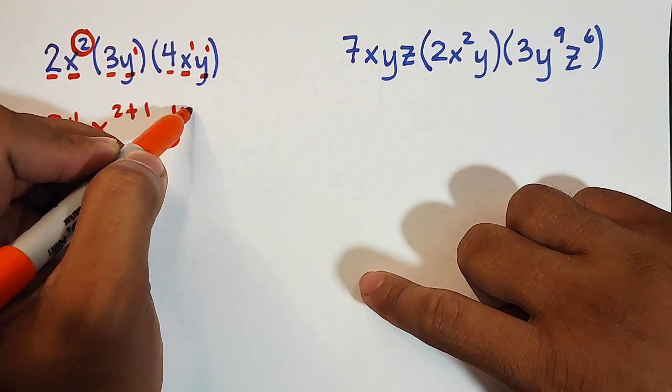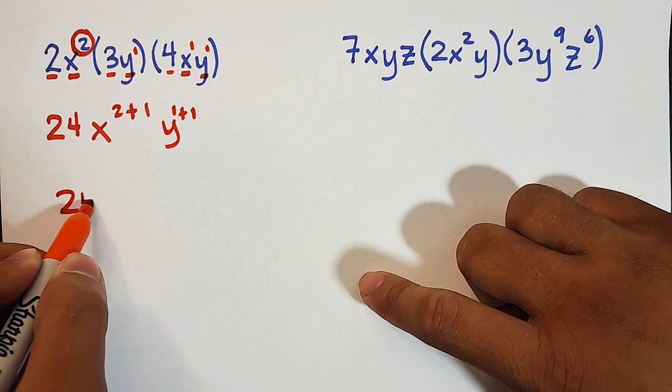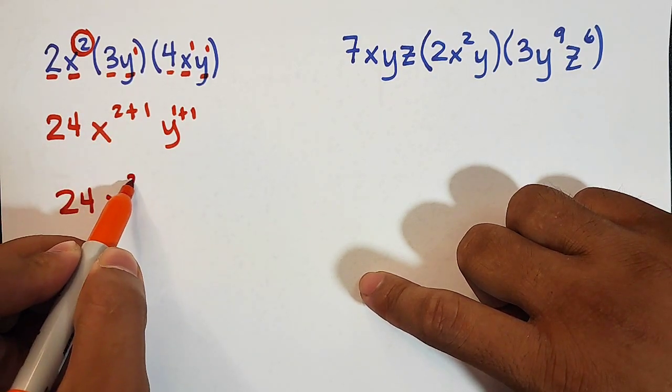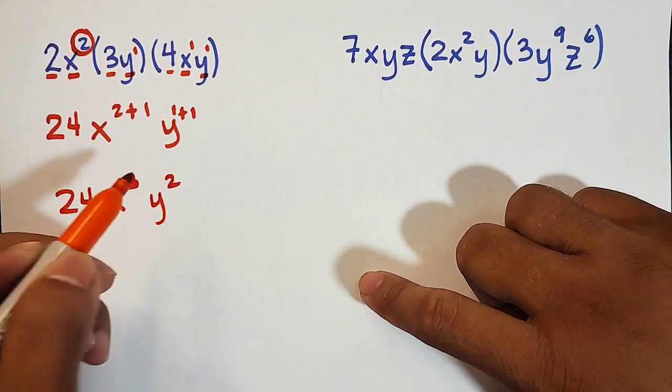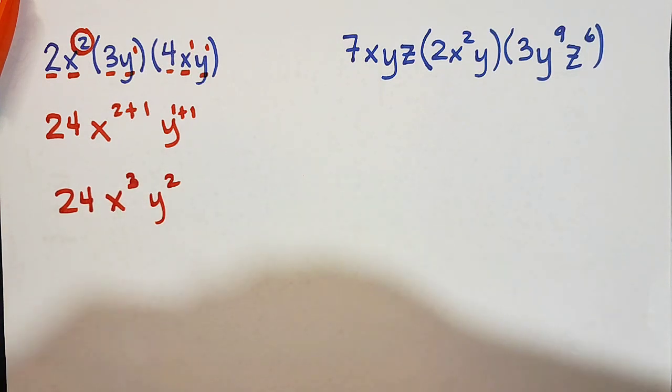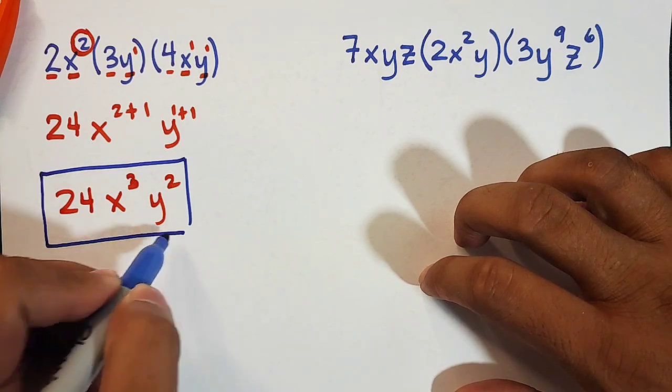So that is 1 plus 1. So simplifying this, you have 24x and 2 plus 1 is 3y. 1 plus 1 is 2. Meaning, the correct answer for item number 1 is 24x cubed y squared.